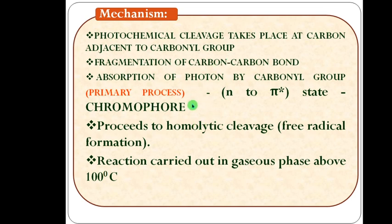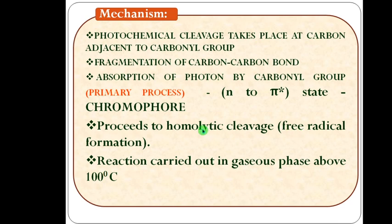Everybody knows that the carbonyl group is a chromophore. The expected transition is an n to pi star transition. This type of reaction is a homolytic cleavage, meaning there will be free radical formation. This reaction is carried out in a gaseous medium above 100 degrees Celsius.